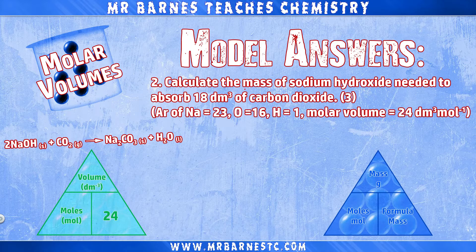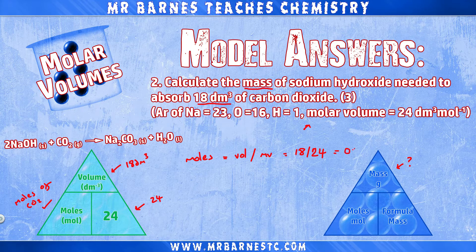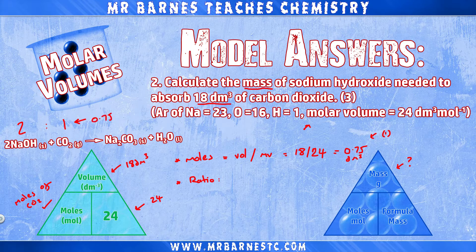The second question: calculate the mass of sodium hydroxide needed to absorb 18 decimetres cubed of carbon dioxide, given the balanced equation, atomic masses and molar volume. Step one: moles of CO₂ = volume ÷ molar volume = 18 ÷ 24 = 0.75 moles. Step two: from the balanced equation the ratio of sodium hydroxide to carbon dioxide is 2:1, so 0.75 × 2 = 1.5 moles of sodium hydroxide.